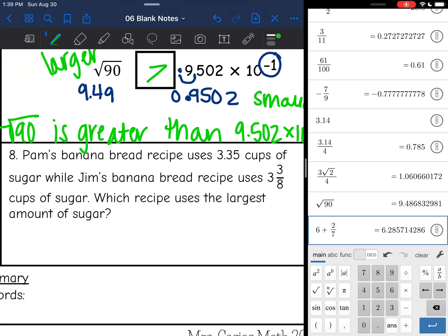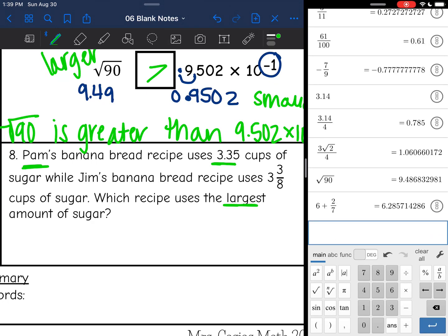Let's look at number 8. Pam's banana bread recipe uses 3.35 cups of sugar, while Jim's banana bread recipe uses 3 and 3 eighths cups of sugar. Who uses the largest amount of sugar? So Pam's is super easy to see. It is already in decimal form. Let's convert Jim's amount of sugar.